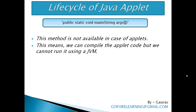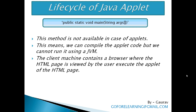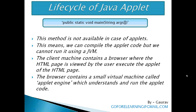Please note that the public static void main String args method is not available in case of applets. This means we can compile the applet code but we cannot run it using a JVM. Once the applet is created, we compile and obtain its bytecode. This bytecode is embedded in an HTML page and the page is sent to the client computer. The client machine contains a browser like IE, Firefox, Chrome etc., where the HTML page is viewed by the user. The same browser will execute the applet of the HTML page. The browser contains a small virtual machine called the applet engine, which understands and runs the applet code.